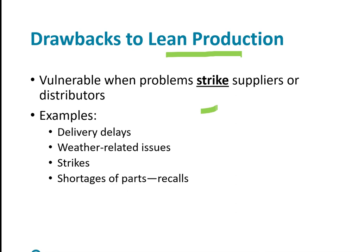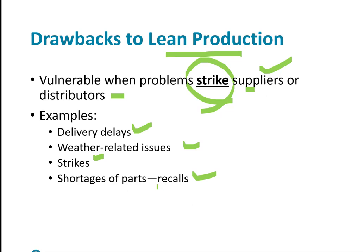There are a few drawbacks to lean production. One is supplier strikes or delivery delays. During 2020, the COVID-19 virus caused a total shutdown of work and many suppliers shut down — things we normally received took a long time, like masks and protective gear for healthcare workers. Weather issues, strikes, shortages of parts, or recalls of bad products can all cause real issues. But for the most part, companies continue to use lean production.